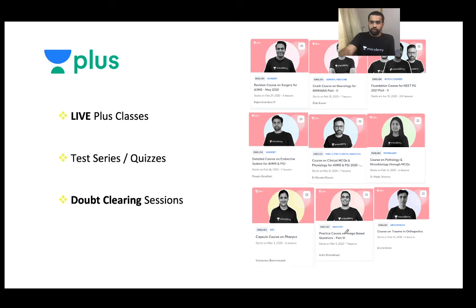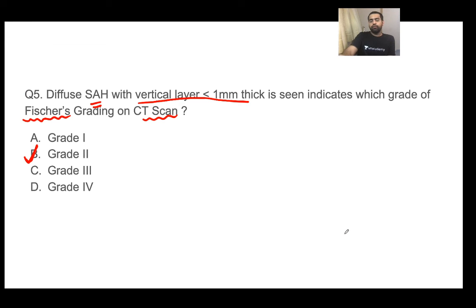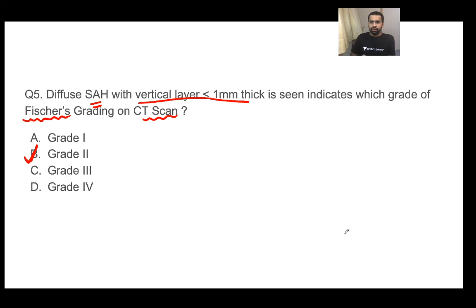That is the end of today's session with five MCQs. For surgery preparation for the NIMANS exam, pay attention to the general part as well since it carries good weightage. For neurosurgery specifically, going through Schwartz and Sabiston is more than enough — your standard PG notes may not suffice, but you don't need to go beyond Sabiston and Schwartz.